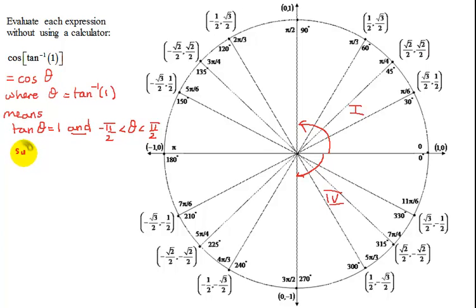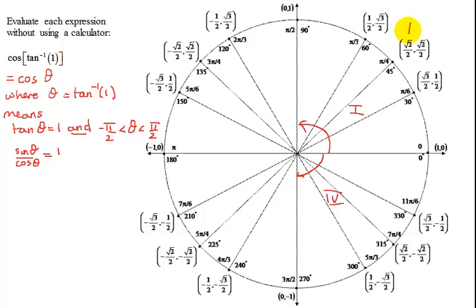Remember, tangent equals sine of theta over cosine of theta. So I need sine of theta over cosine of theta to equal positive 1, which means the sine and cosine have to be equal. If I look in quadrant 1, which angle has sine of theta equal to cosine of theta? I think it's pi over 4, because the x-coordinate — which is the cosine of theta — equals the y-coordinate — which is the sine of theta.